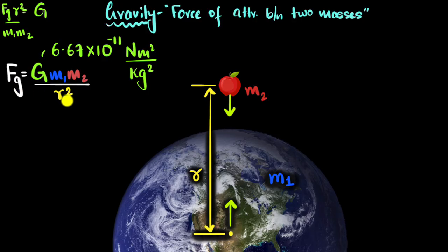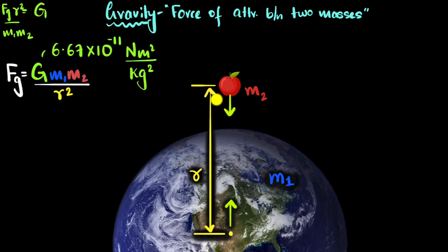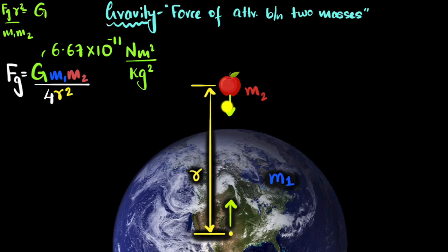Now let's look at the denominator — there is an r squared. Since the force of gravity is inversely related to the square of the distance, we also call this the inverse square law. What does that mean? If you were to double the distance between the center of the Earth and the apple, the force wouldn't become half. If r becomes 2r, I now get 2r the whole square, which gives 4r squared. So the force of gravity becomes one-fourth — not half.